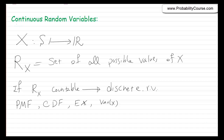In this video, we talk about continuous random variables. Remember that a random variable is a real valued variable whose value is determined by an underlying random experiment. Equivalently, we defined a random variable x as a function from the sample space to the set of real numbers — a function that assigns real values to the outcomes in the sample space.